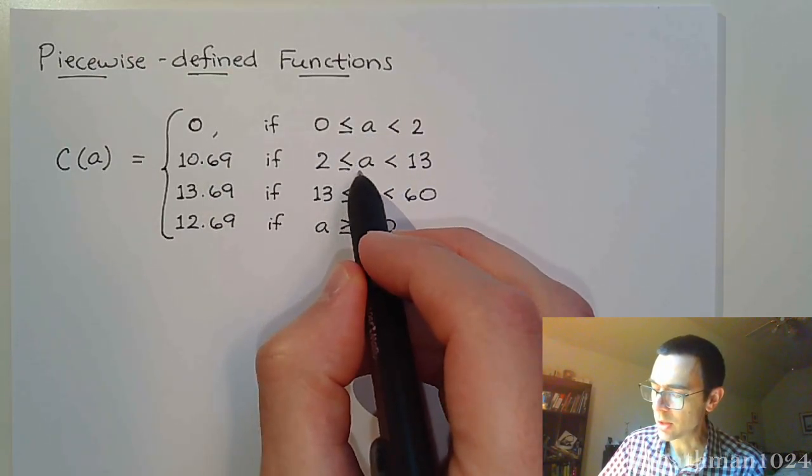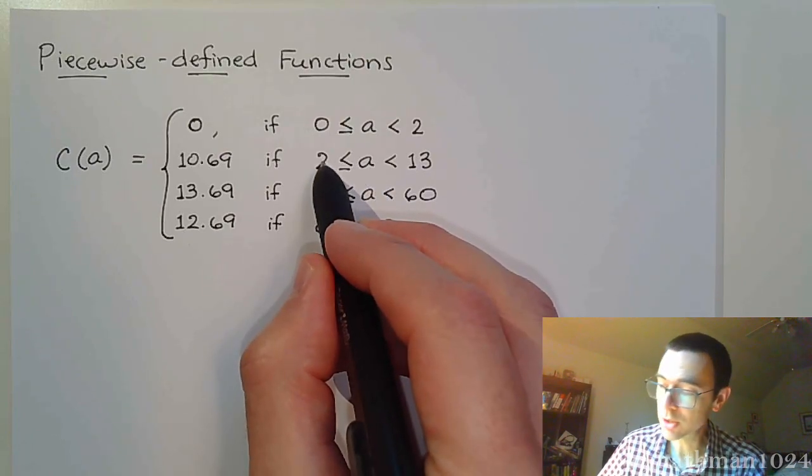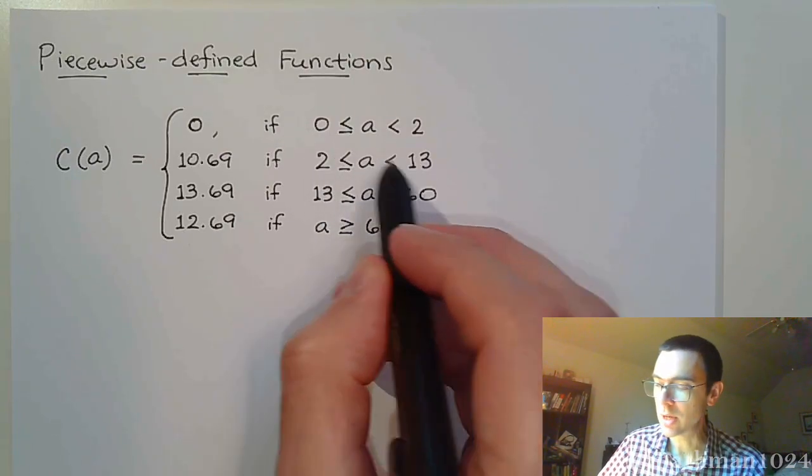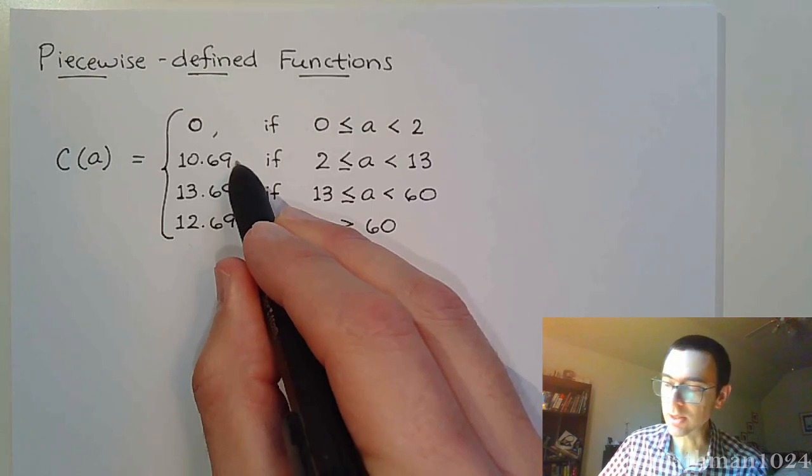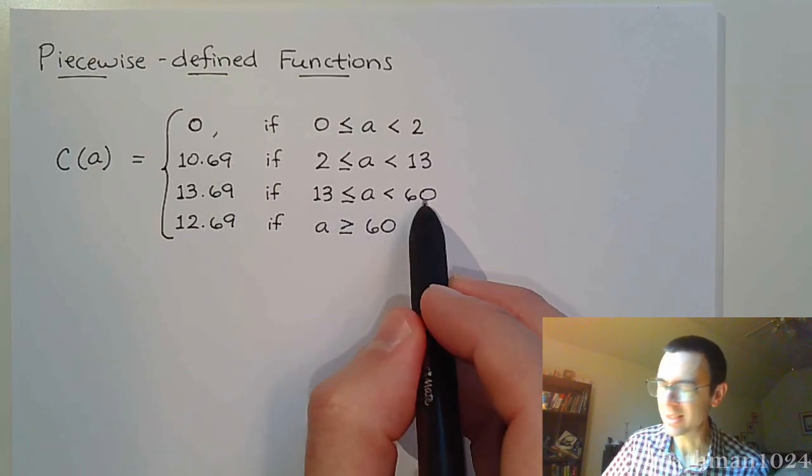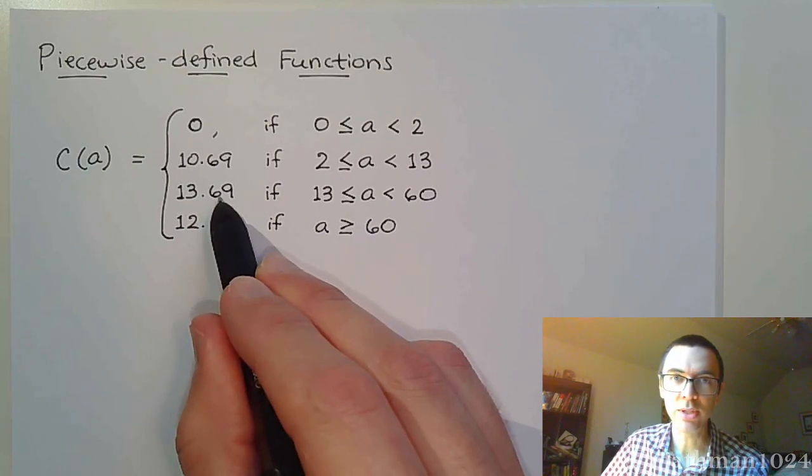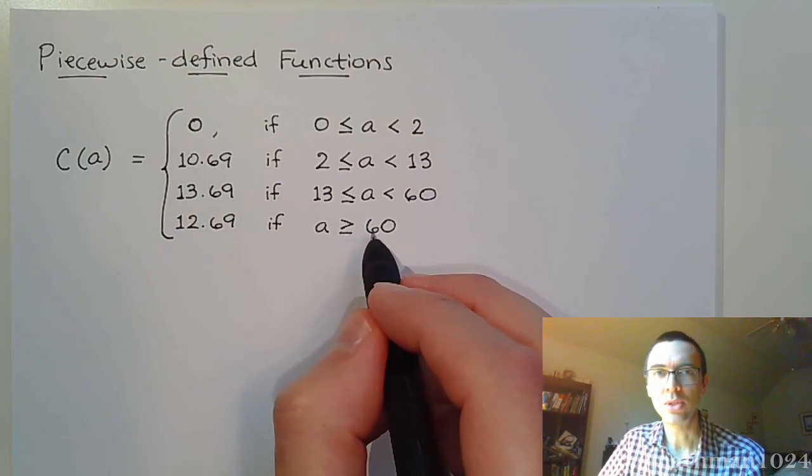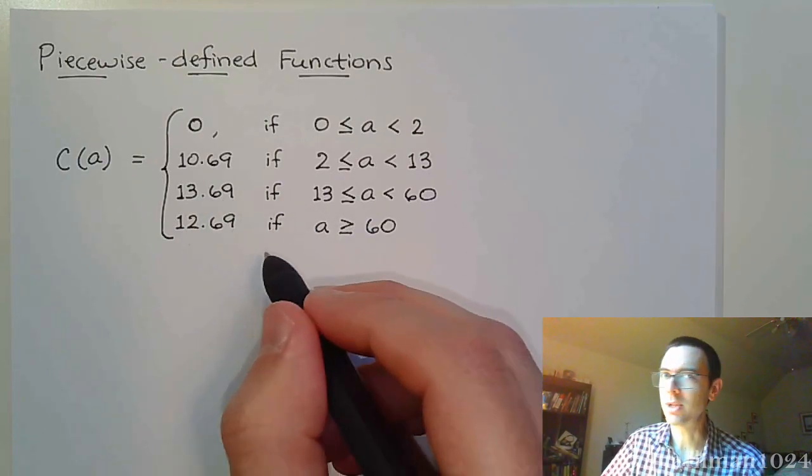If you take a child who is, say, they've already turned two but they're not quite a teenager, then they pay $10.69. And then if you're between the ages of 13 and not quite 60, it's going to be $13.69.